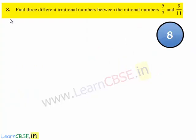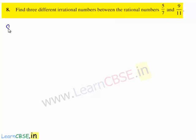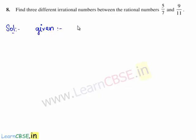Now let us move on to the 8th question. The question is: find 3 different irrational numbers between the rational numbers 5 upon 7 and 9 upon 11. So let's move on to the solution. The given two rational numbers are 5 by 7 and 9 by 11. To find 3 different irrational numbers between them, let us first find their decimal expansions.